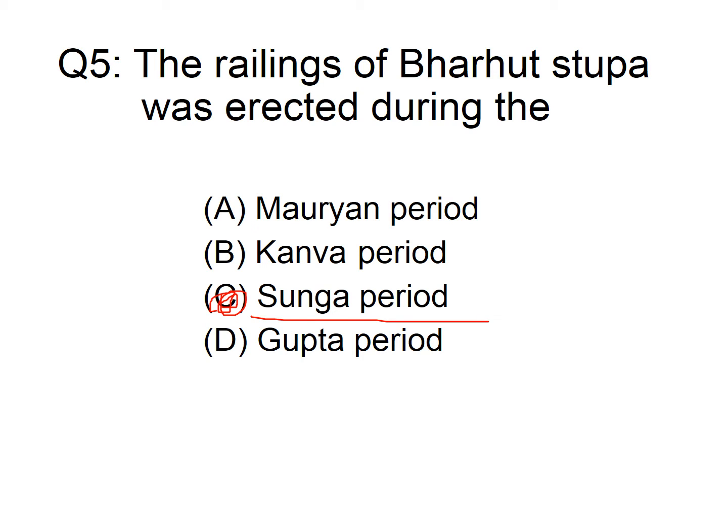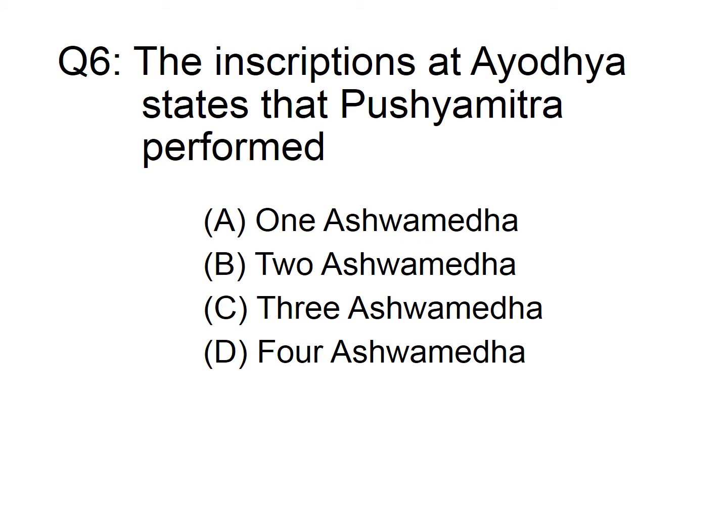The Barhut Stupa was first built by Mauryan king Ashoka, but the works of art, which include the railings, were apparently added during the Sunga period. The inscriptions at Ayodhya state that Pushyamitra performed how many Ashwamedhas? Option A: 1, B: 2, C: 3, D: 4 Ashwamedha. The answer is option B, 2 Ashwamedha. Ashwamedha is a horse sacrifice, generally performed by ancient kings to prove their imperial sovereignty.